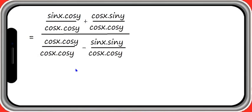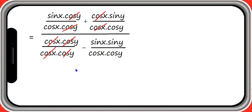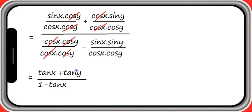Now you can observe there are some terms that will cancel. Cos y and cos y cancels, cos x and cos x cancels, and similarly in the denominator cos x and cos y cancel. The remaining term in the numerator is sin x by cos x, which is tan x. In the second term, sin y by cos y is tan y. In the denominator, the first term becomes 1, and the second part sin x by cos x is tan x, sin y by cos y is tan y. This gives the formula for tan of x plus y.